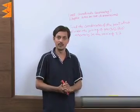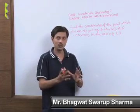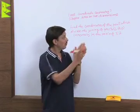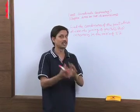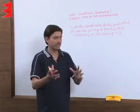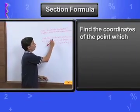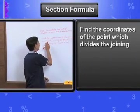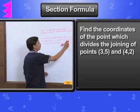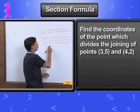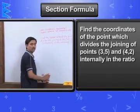Now, I am taking one example where we will apply, where we will use our formula of the section, that is the section formula. What is this? Find the coordinates of the point which divides the joining of points (3, 5) and (4, 2) internally in the ratio of 3 is to 2.